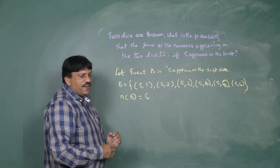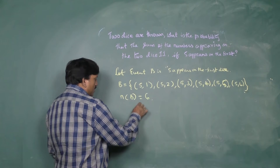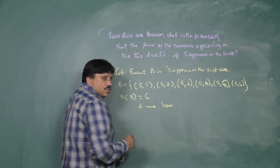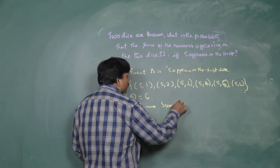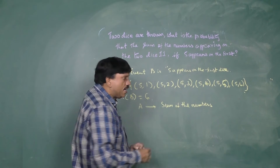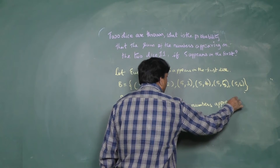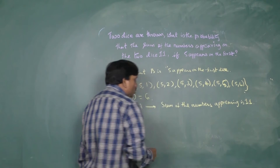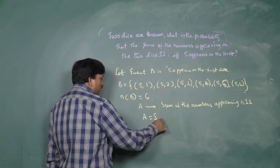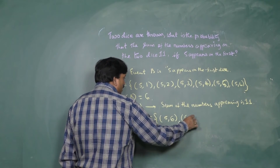Also, let A be the event that the sum of the numbers appearing is 11. Writing the possibilities: first die five and second die six gives (5,6); first die six and second die five gives (6,5). So set A = {(5,6), (6,5)}.